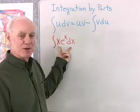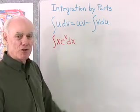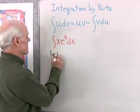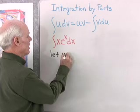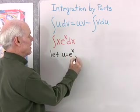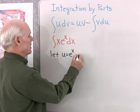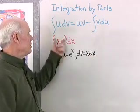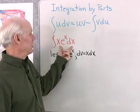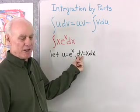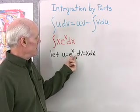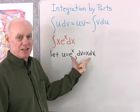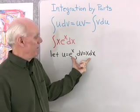Let's try it with this example: the integral of x e to the x dx. Let's try to make a substitution and see what works. I'm going to start by saying: let u be equal to e to the x, then the rest of this will be dv, so dv will be equal to x dx. You have to use everything up in your integral with u and dv, and u times dv is going to be x e to the x dx — so I've used everything up.